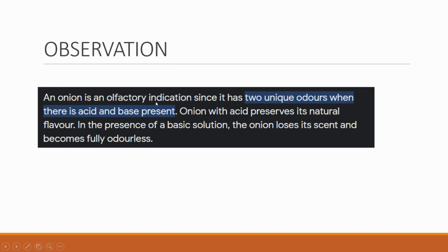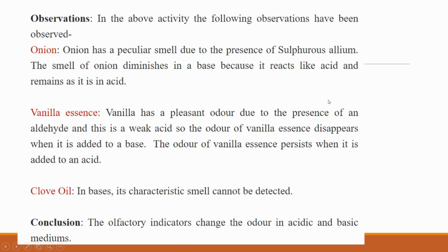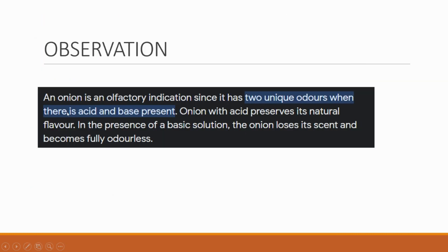An onion is an olfactory indicator. The olfactory indicator is based on smell. It is called an olfactory indicator because it has two unique odors depending on the presence of acid or base. When it comes into contact with an acid, you get the smell of the natural onion flavor. And when it comes into contact with a basic solution, it becomes odorless.